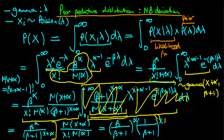Similarly, gamma of alpha in the denominator is just equivalent to alpha minus 1 factorial. We then notice that x plus alpha minus 1 factorial on top and alpha minus 1 factorial on the bottom — together with x factorial — is just equivalent to NCR notation, which is the sort of thing we originally encountered in the binomial model.